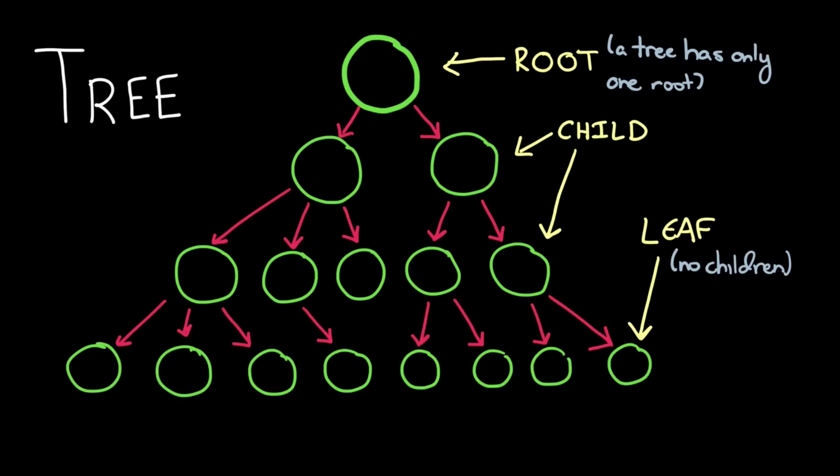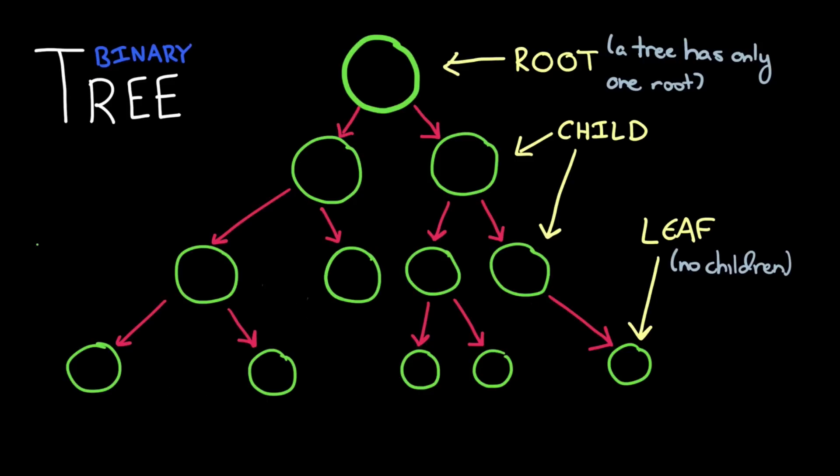Very often when we're talking about trees we talk about binary trees. A binary tree means that each node has no more than two child nodes. That is, each node has a left node and a right node. Of course, one or both of those could also be null.